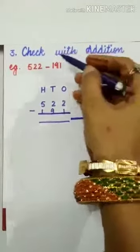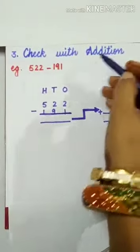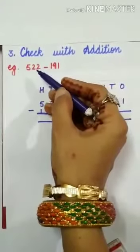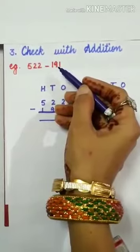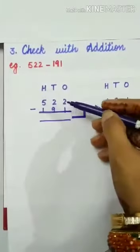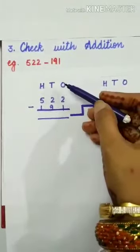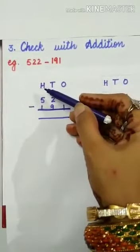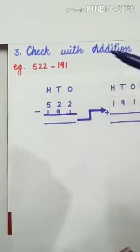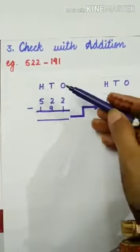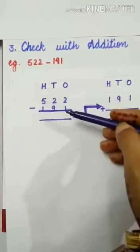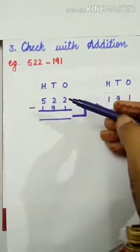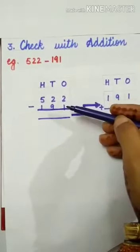Now the third method is check with addition. Here the question is 522 minus 191. First of all, arrange these two numbers vertically under ones, tens, and hundreds column. And you know now from which place we have to start? Yes, we have to start from the ones place. So now 2 minus 1.